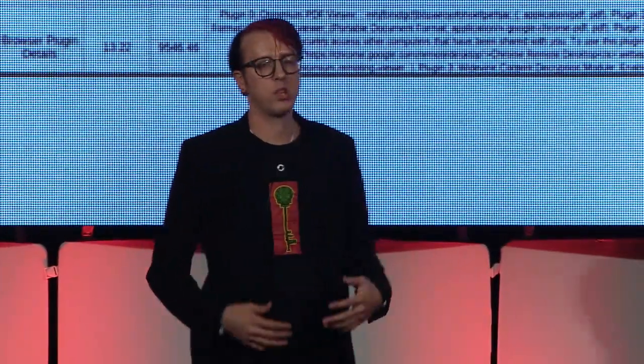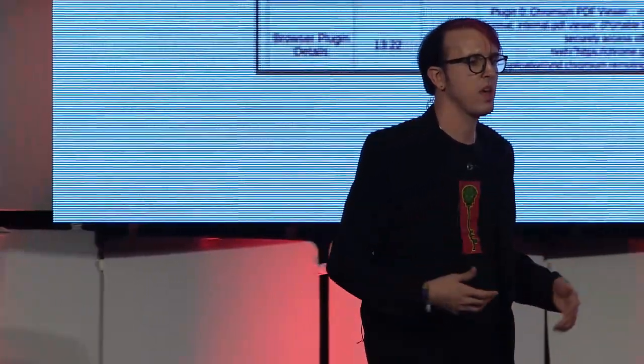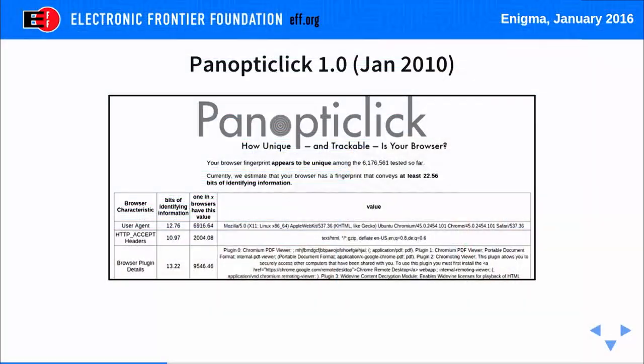At EFF, we were confident that browser fingerprinting was possible, and we wanted to gather more data and learn about the ways browsers were delivering unique bits of information about users. So in January 2010, we launched PanoptiClick 1.0. We asked volunteers to participate in this experiment — not just to learn more about users' unique browsers, but also for users themselves to get a good idea about how unique their browsers are.